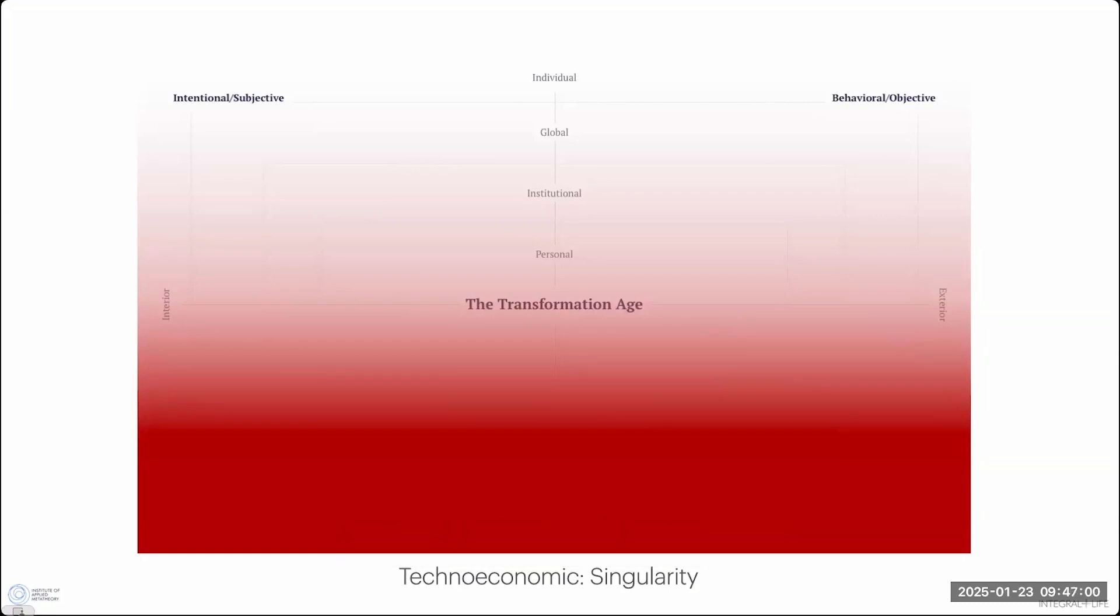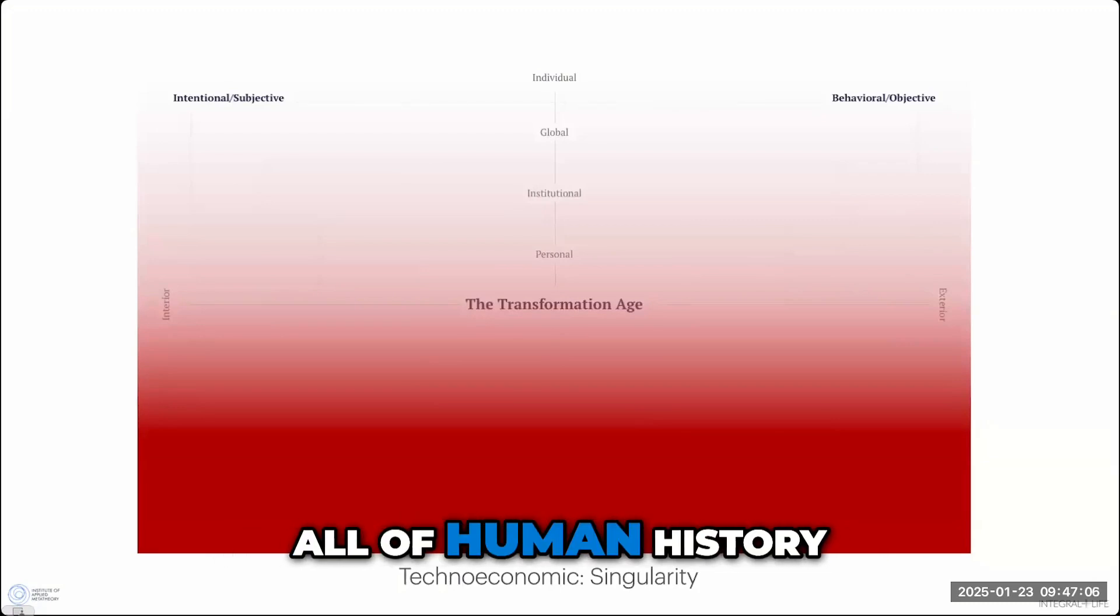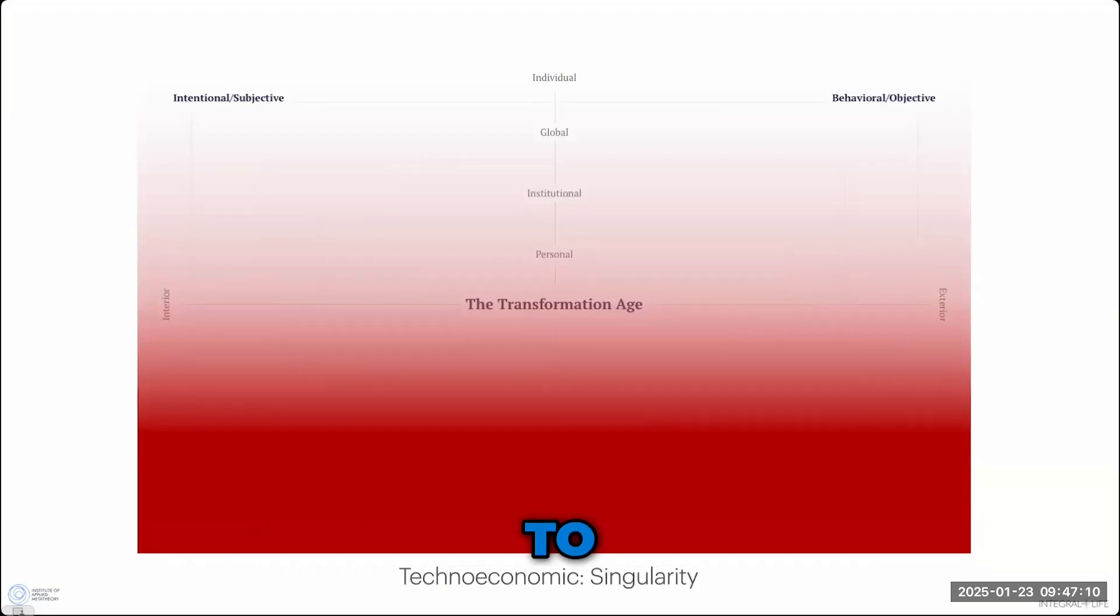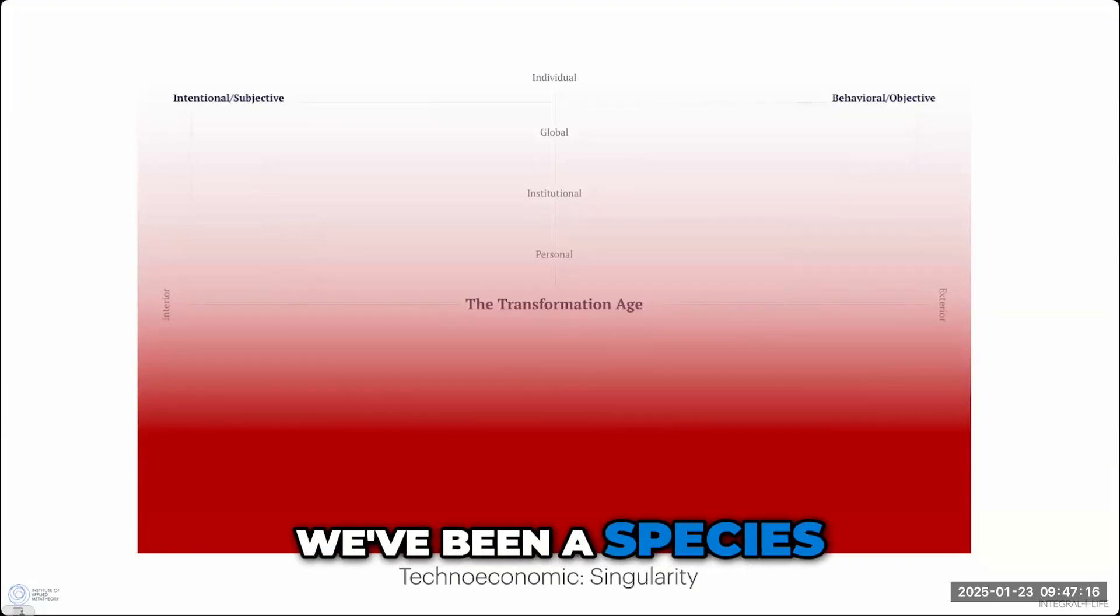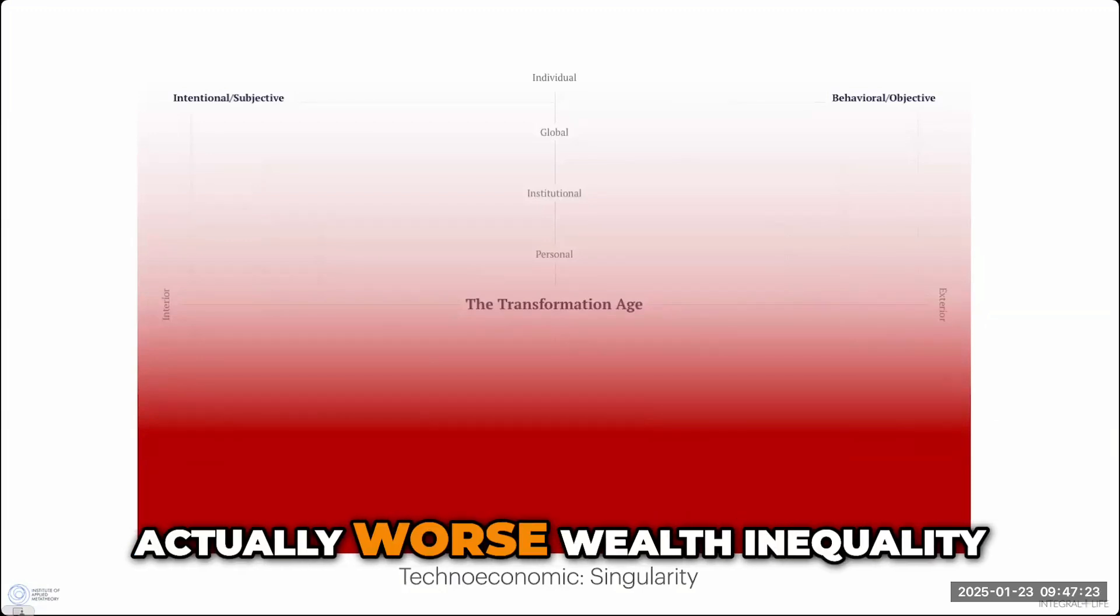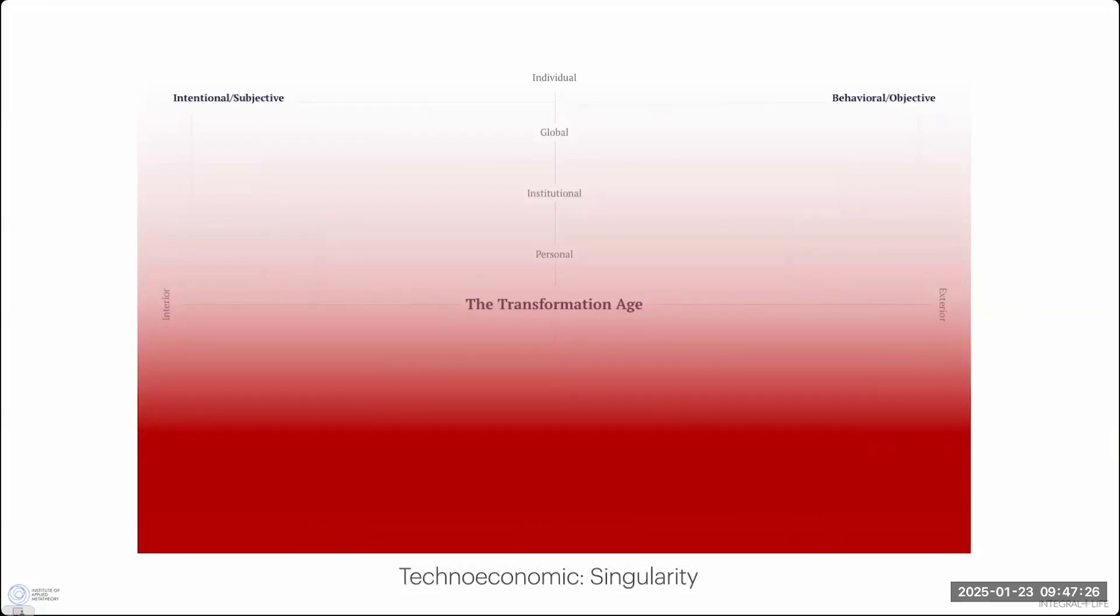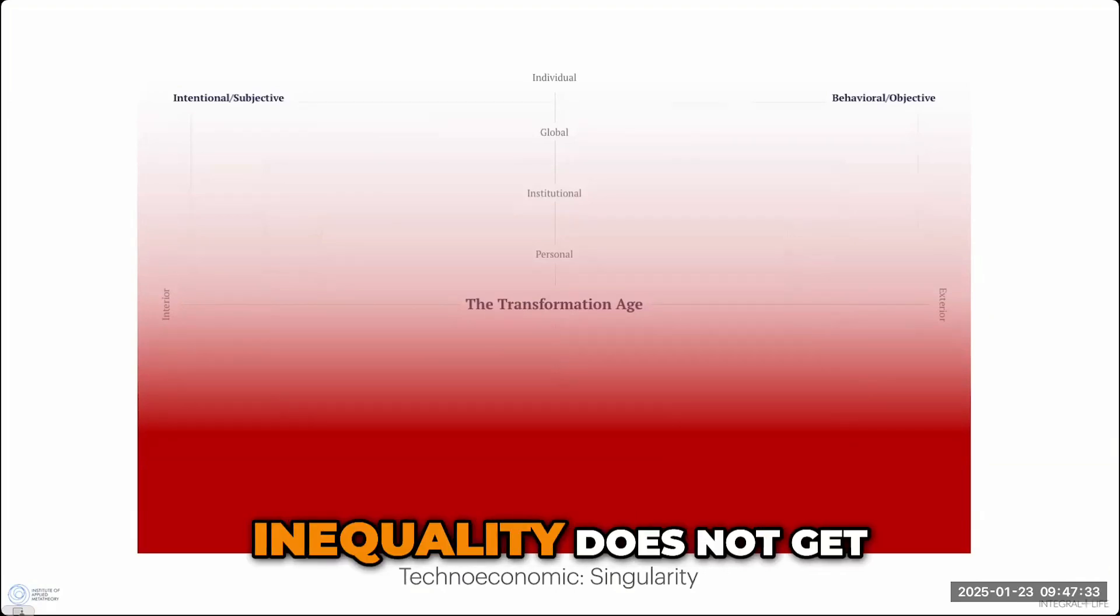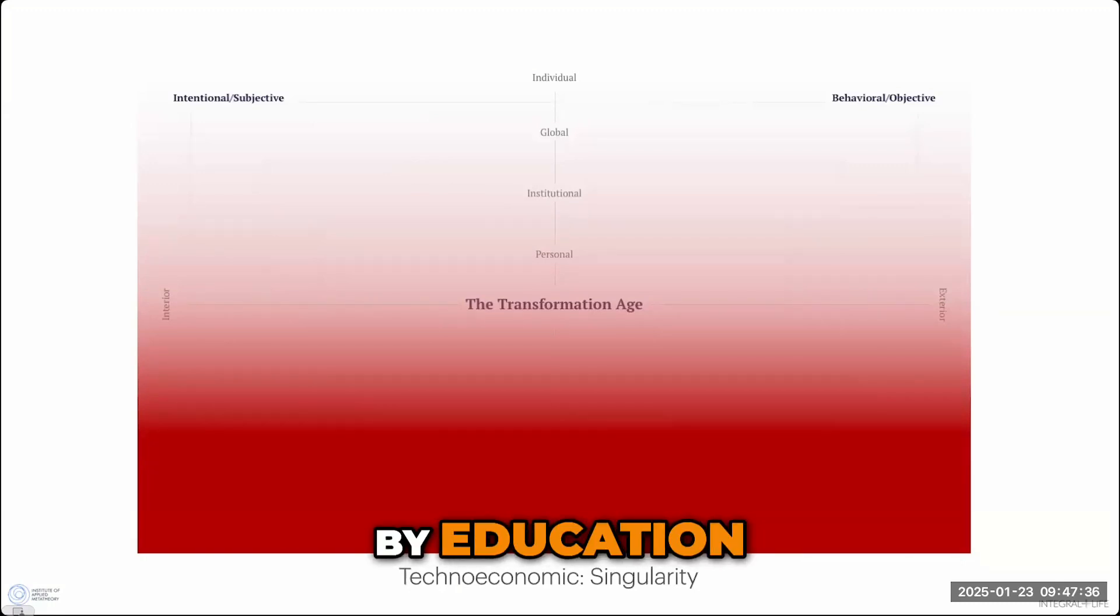This would not be, to remind us, this would not be a radical departure from all of human history. This would be a return to what human history has been. For 12,000 years, we've been a species of significant wealth inequality. Many periods that are actually worse wealth inequality than we have today. The history of that is that that wealth inequality does not get leveled by education. It does not get leveled by regulation. It does not get leveled by politics. None of those things do it.